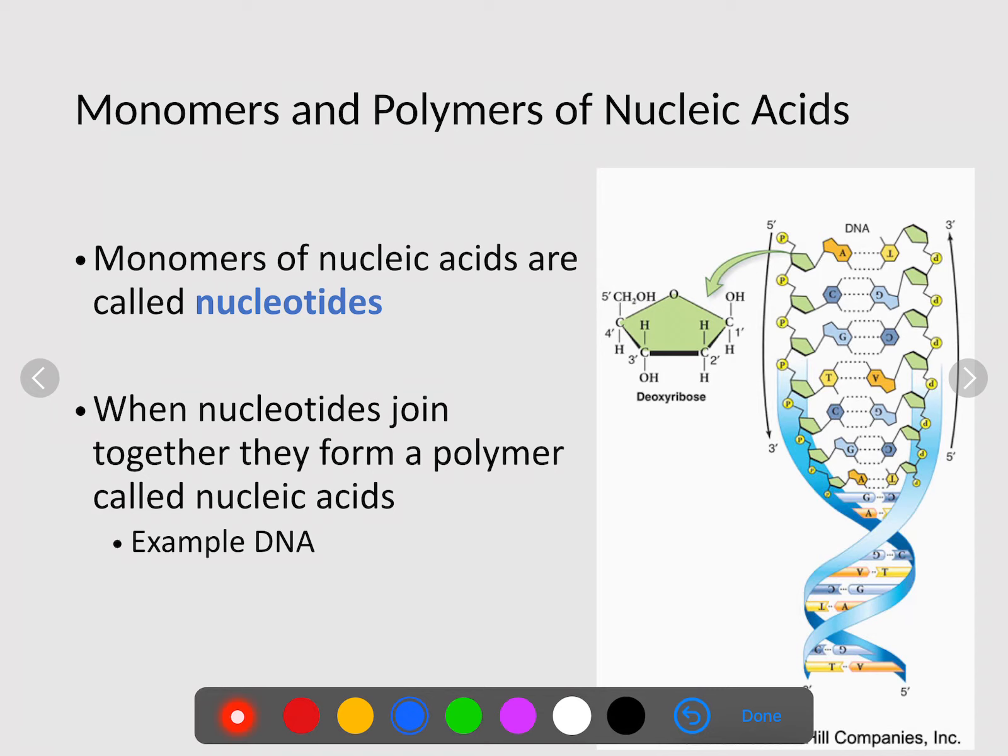The monomers of nucleic acids are called nucleotides. Here is one nucleotide of DNA. A bunch of these joined together to form DNA are polymer. When nucleotides joined together, they form a polymer called nucleic acid, which is our example of DNA.